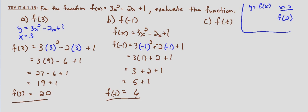f of 3 equals 20, f of negative 1 equals 6. And part C, this is the first time we're looking at something that's just a little bit different. Instead of evaluating the function at a specific numerical value, we're given another variable. And it doesn't have to be just a variable, it could be an expression of a variable.